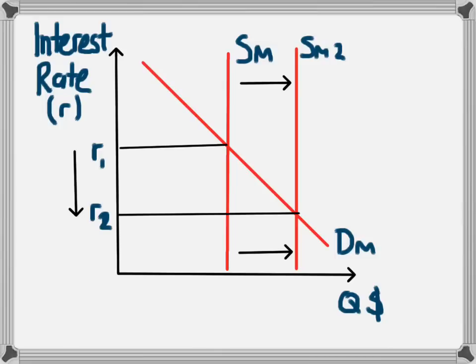The way that the government influences the supply of money in the economy is by buying and selling government bonds. To increase the amount of money in the economy, it needs to hand money over to people, and to do this the central bank will be buying back government bonds. That puts more money into the economy, increasing the supply of money from SM to SM2, and that decreases the interest rate from R1 to R2.